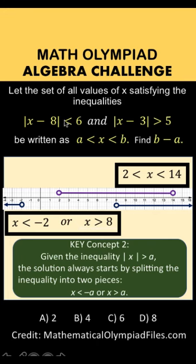But notice that the original two inequalities are connected by the word 'and'. So we want the intersection of the first solution set and the second solution set. Clearly from the graph, the intersection is from 8 to 14.